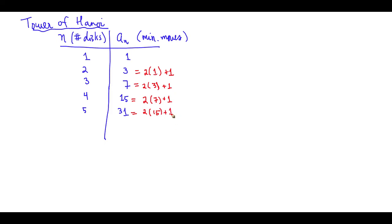So however many disks there are, if we want to figure out the minimum number of moves, we look at the previous minimum number of moves, multiply that by two and then add one to it. And we can trace this process back all the way back to one disk.